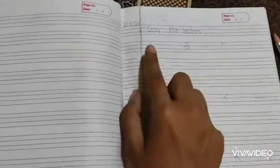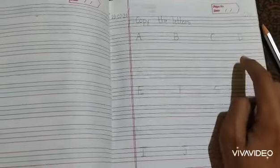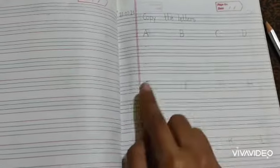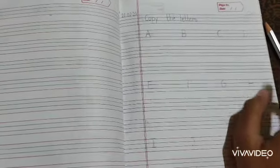But in exam the question will be like write the letters where they have to write A to Z by their own. So this is for the practice and you have to give four letters in one line, leaving two lines for the practice. Give one or two dots only, not more than that.